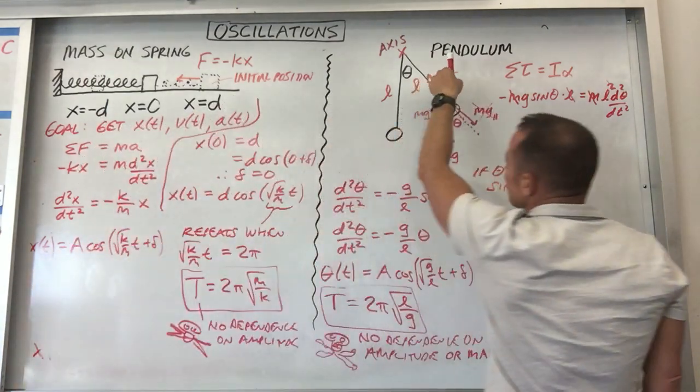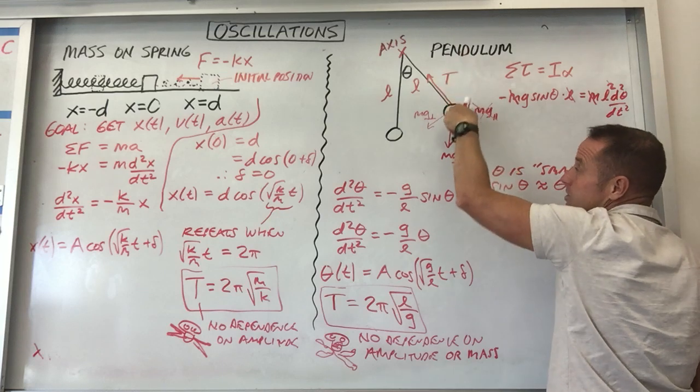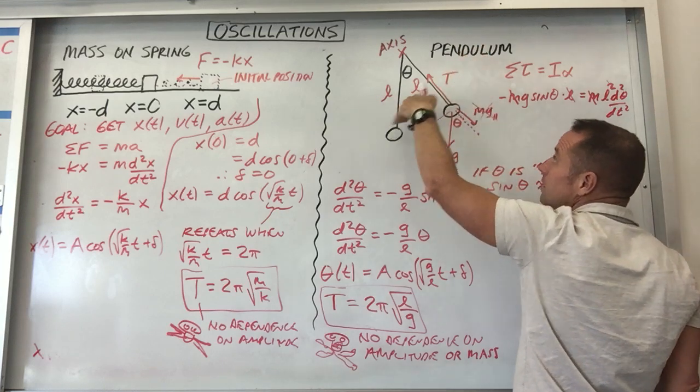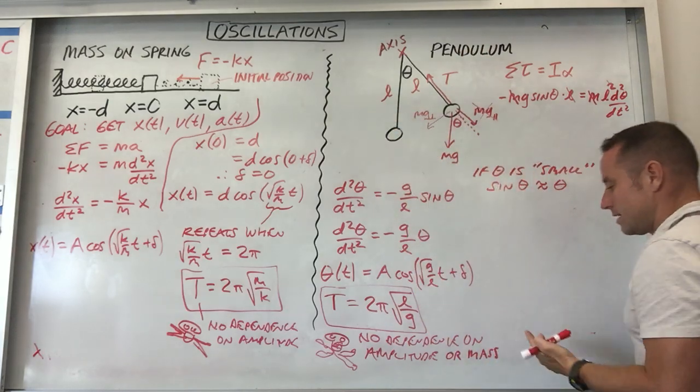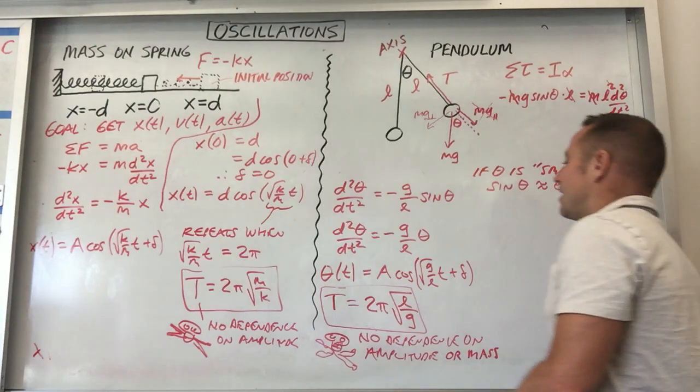Notice the mass doesn't show up at all in the equations of motion for the pendulum. If you increase the mass, you would have more torque because of the increased weight, but then you'd also have a greater moment of inertia. And so those effects kind of compete and it comes out in the wash. So it ends up not influencing the motion.